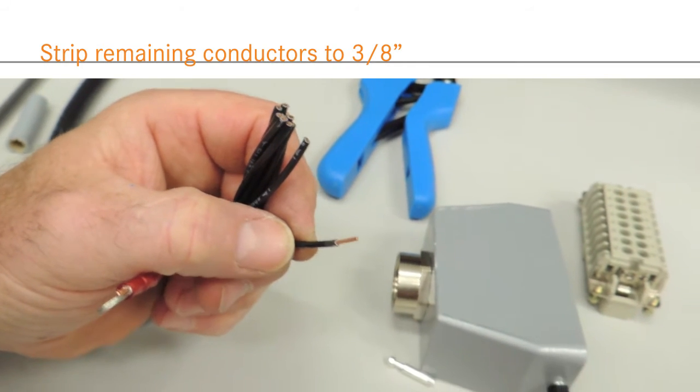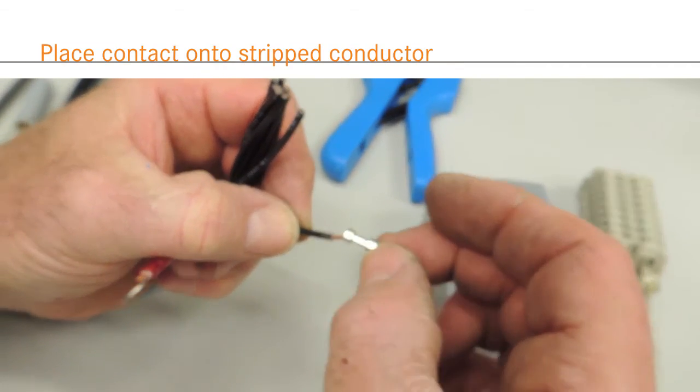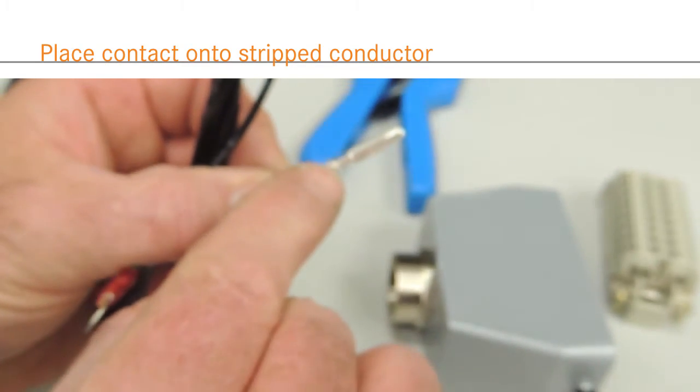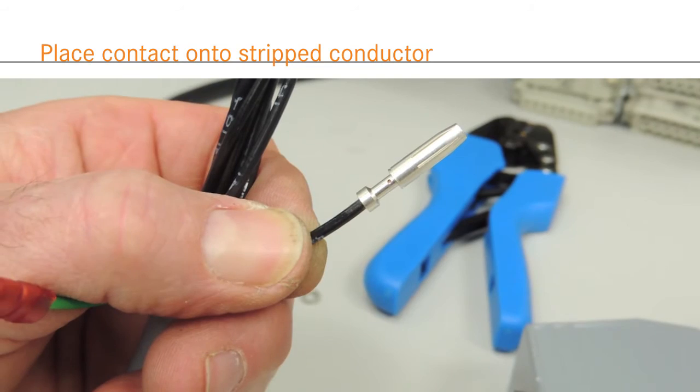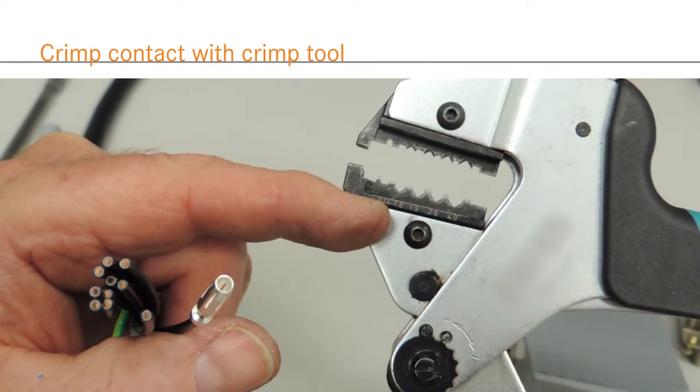Insert the stripped wire into the crimp contact. In this example, we are using 2.5 millimeter diameter silver-plated machined contacts. You should be able to see the copper through a small hole in the side of the contact. If not, strip more of the insulation.